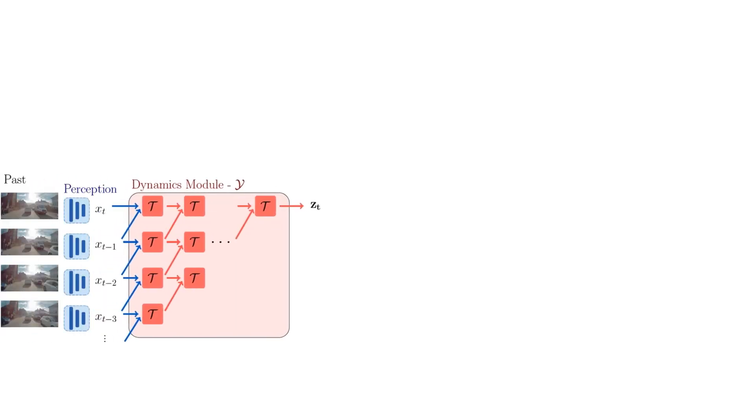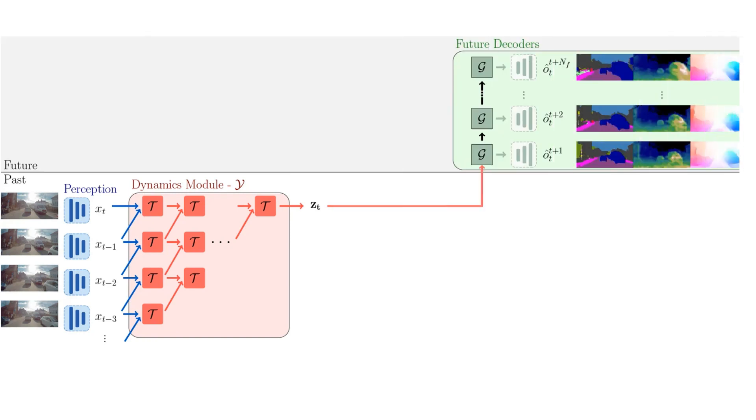Our dynamics module then combines spatio-temporal information from the scene. The proposed architecture learns hierarchically rich features with both local and global, spatial and temporal context. From this representation, we can decode future perception outputs.